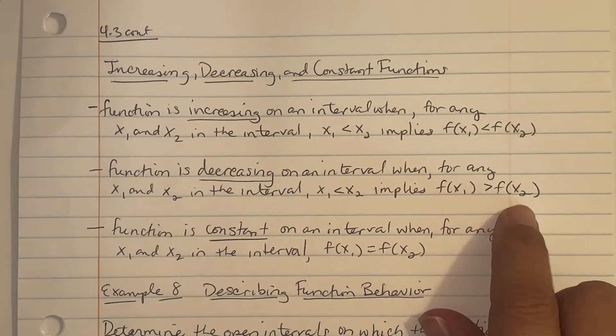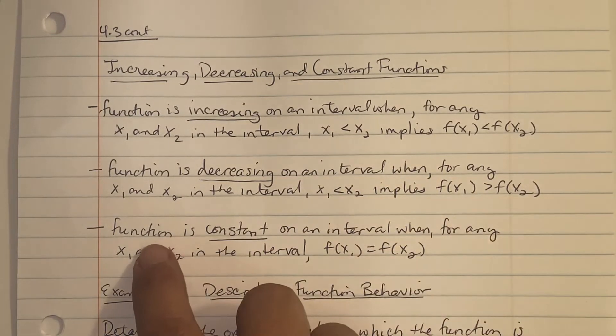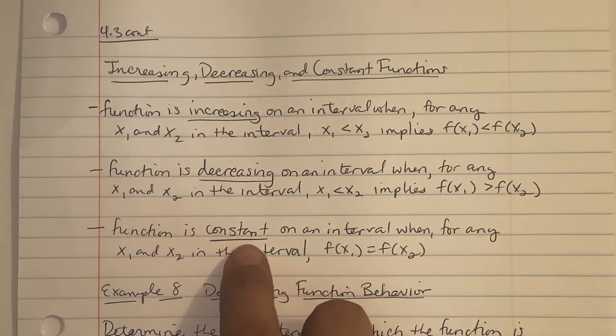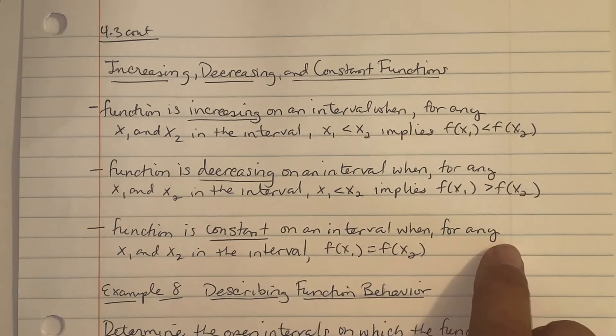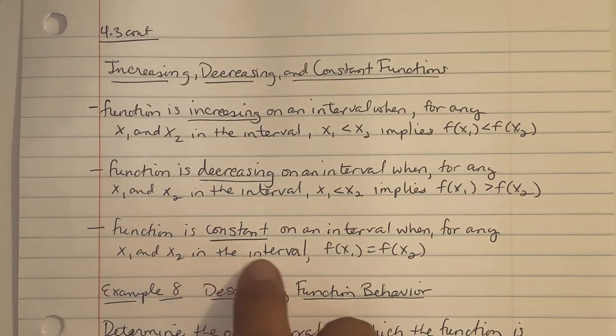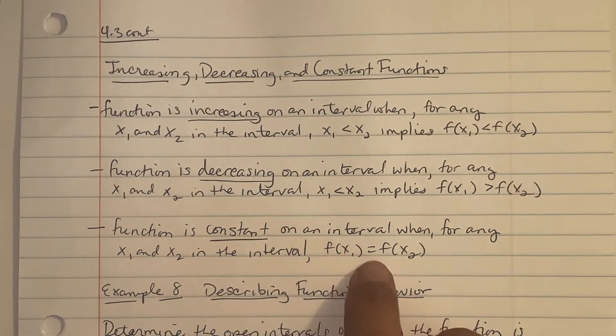A function is constant on an interval when for any x₁ and x₂ in the interval, f(x₁) is equal to f(x₂).